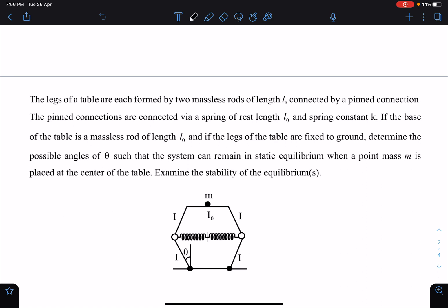It is given: the legs of a table are each formed by two massless rods of length l. So these are the junctions basically, you can say these are the hinges. There is one pin here and one pin here, and this is one rod, this is one rod, this is one rod, and this is one rod. This is called the table.